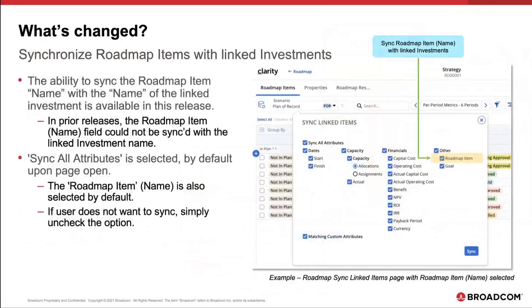Finally, when prioritizing or sequencing roadmap items, users expect to see the same naming conventions in place for linked investments. This feature was requested as part of the Customer Innovation Program. The ability to sync a roadmap item name with the name of a linked investment is now available in this release. In the sync linked item pop-up, there's a roadmap item entry for the name, and that checkbox is part of this other section.